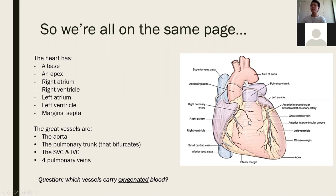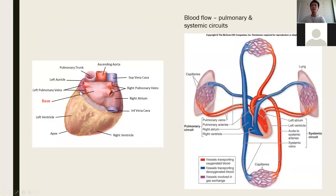There are four groups of great vessels: the aorta, which forms an arch, descending aorta, and branches; the pulmonary trunk, going out from the right ventricle to the right and left lungs — these are the two outflow vessels; the SVC and IVC, both draining into the right atrium; and four pulmonary veins draining into the left atrium, carrying oxygenated blood back from the lungs.